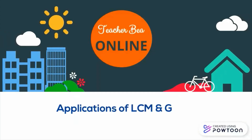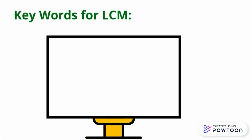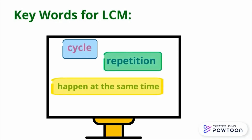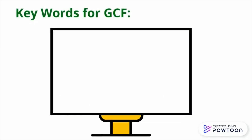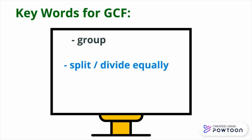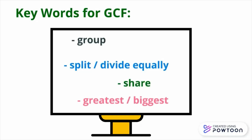Here are word problems to develop our understanding of GCF and LCM and their real-life applications. Our keywords for LCM are: cycle, repetition, happen at the same time, and smallest or least. Our keywords for GCF are: group, split or divide equally, share, and greatest or biggest.